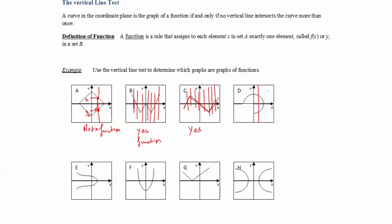For graph D, the vertical line test shows that one vertical line is enough — it intersects the curve more than once, meaning this x has two y values. Therefore, D is not a function. For graph E, it's the same situation: the vertical line crosses the curve twice, so E is not a function.